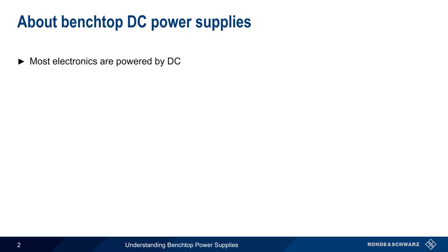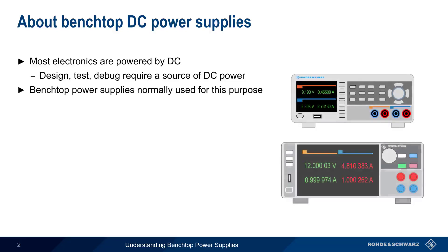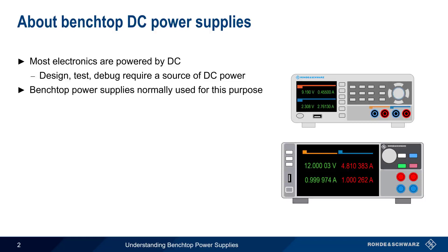Most electronics are powered by DC, or direct current, and therefore a DC power source is required for almost all design, testing, and debugging of modern electronics. Although it's possible to use a fixed, non-configurable source of DC power, so-called benchtop or bench power supplies are normally used for this purpose. There are many different models and configurations of benchtop power supplies, but there are some common requirements for almost any type of supply.